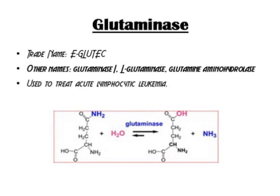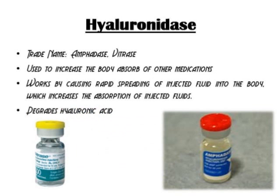Glutaminase is also a widely used enzyme in medicine. It converts glutamine and water into glutamate and ammonia. Glutaminase I, L-glutaminase, and glutamine aminohydrolase are some of the drug forms used. E-Glutec is the trade name for this drug. Hyaluronidase is a family of enzymes that degrade hyaluronic acid. It functions by catalyzing the hydrolysis of hyaluronic acid, a constituent of the extracellular matrix. Hyaluronidase lowers the viscosity of hyaluronic acid, thereby increasing tissue permeability and the body's absorption of other medications. Amphidase and Vitrase are examples of such drugs.